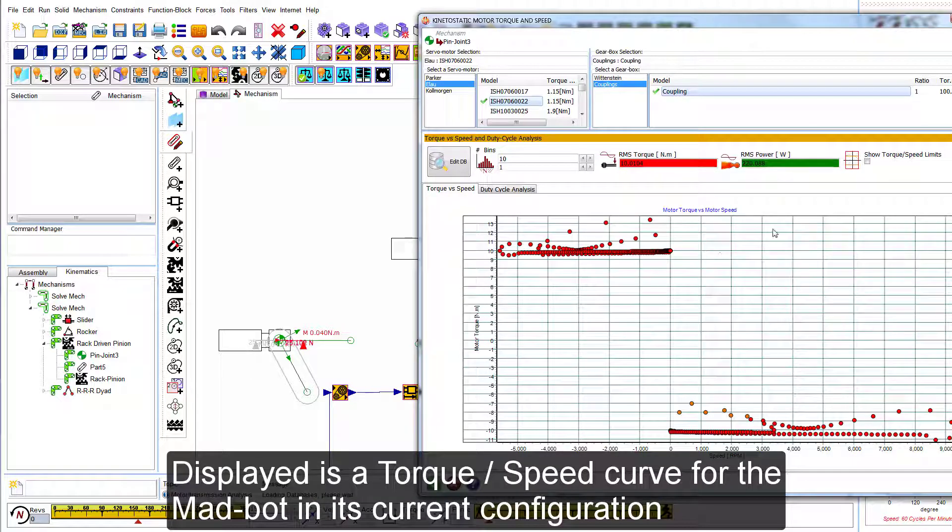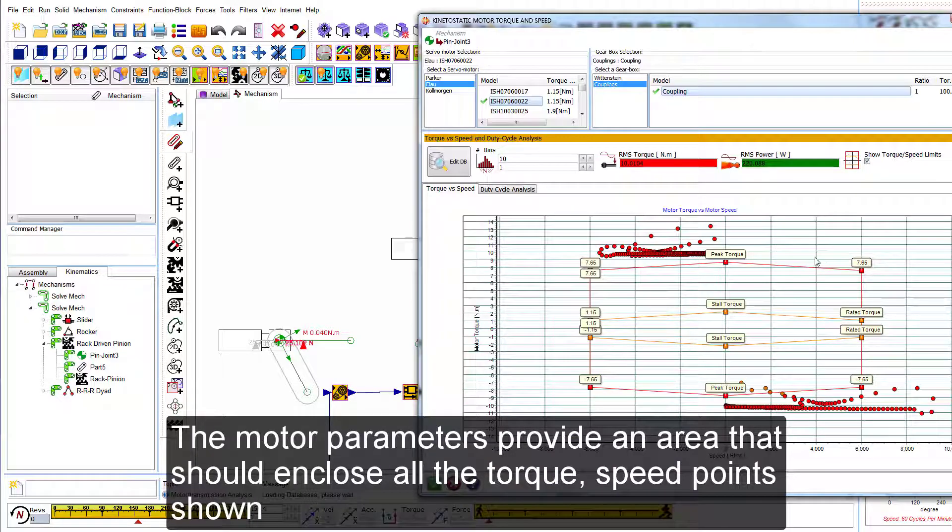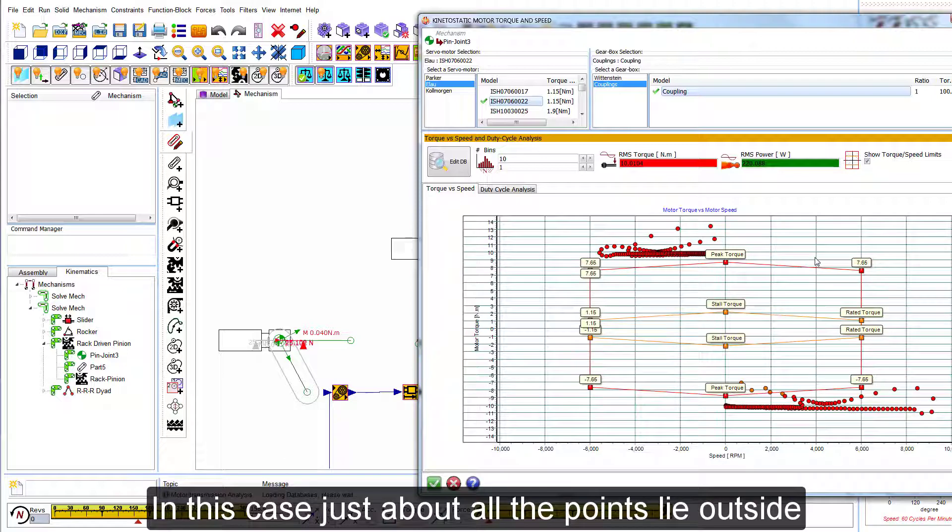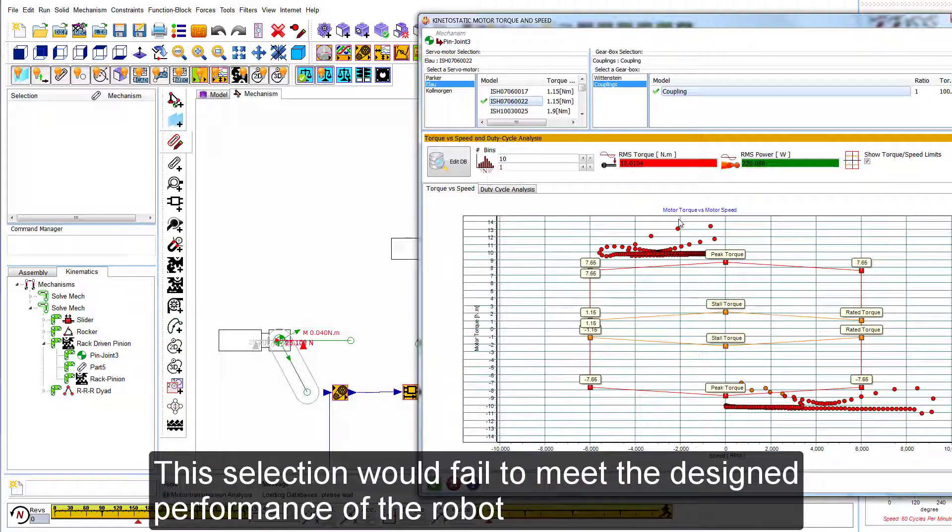Displayed is a torque speed curve for the Madbot in its current configuration. The motor parameters provide an area that should enclose all the torque speed points shown. In this case, just about all the points lie outside. This selection would fail to meet the design performance of the robot.